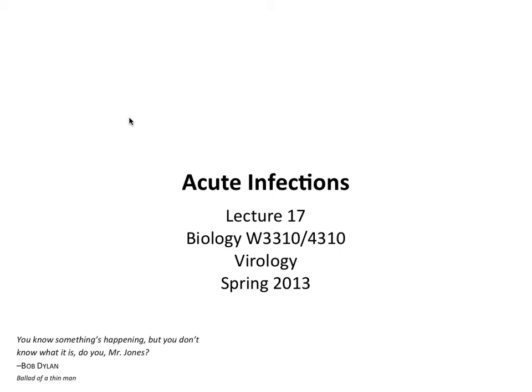Good afternoon everybody. You guys heard about this new influenza virus in China? It's an avian virus that's been around for a long time and they have a number of cases of human infections now and a couple of fatalities. So this is what happens all the time. We'll probably talk about that in a subsequent lecture. Today we're going to talk about acute infections — that is one type of infection — the ones that are over quickly, and give you some examples.